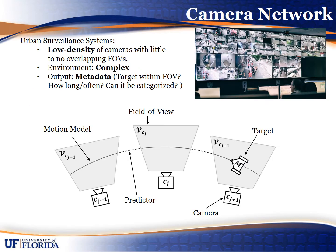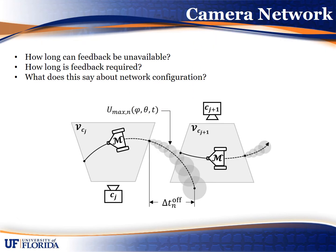We can also extend these ideas to networks of cameras. For example, consider the case of an urban surveillance system where there may be many cameras distributed in an area of interest that may or may not have overlapping fields of view. We can apply the same estimation and prediction ideas where information is shared among the different cameras and agents in the system. Questions arise related to how long feedback can be unavailable to reliably track a target, and if we have the choice to design the camera structure, can the dwell time information be used to inform the network design to minimize the number of static cameras needed.